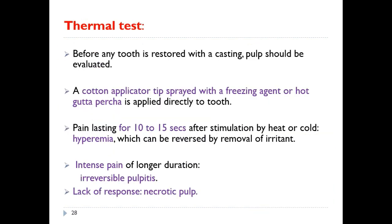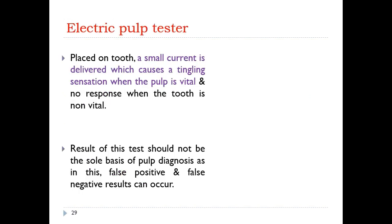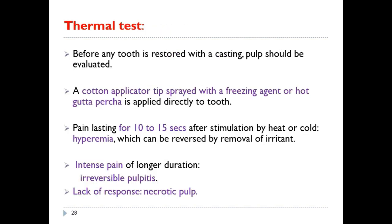For the thermal test, before any tooth is restored, pulp vitality should be evaluated. A cotton applicator is sprayed with a freezing agent, or hot gutta-percha is applied directly to the tooth. Pain lasting 10 to 15 seconds after stimulation indicates hyperemia, which is reversible by removal of the irritant. Intense pain of longer duration indicates irreversible pulpitis requiring endodontic treatment; no response to the thermal test indicates a necrotic pulp.